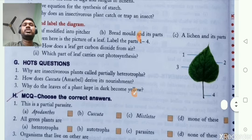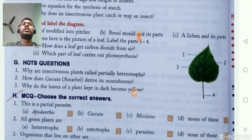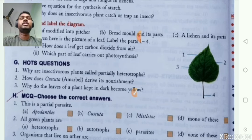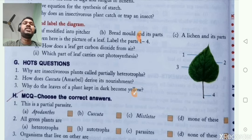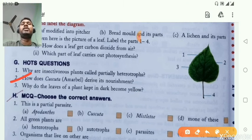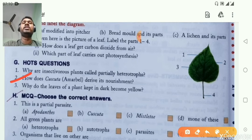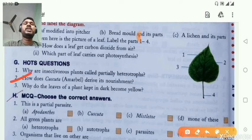Next hot question: Why are insectivorous plants called partially heterotrophic? Insectivorous plants are called partially heterotrophic because they can perform photosynthesis like autotrophs, but also obtain nutrients from insects like heterotrophs.